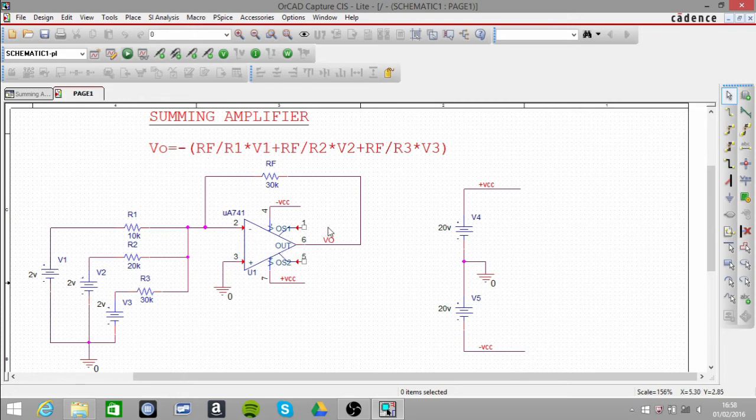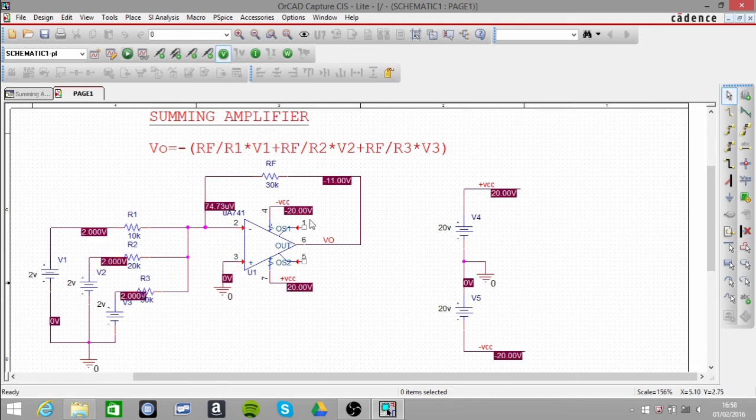our output voltage therefore is going to be minus 11V. So if we click on our voltage button, we can see that the output is minus 11V. And that is how the summing amplifier works.